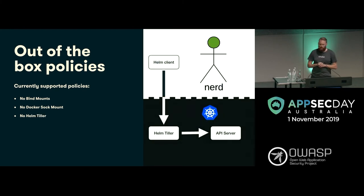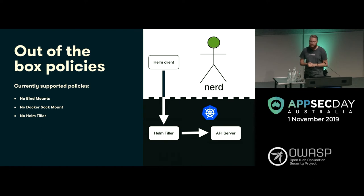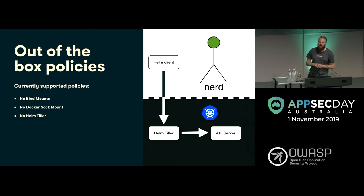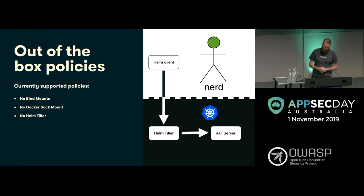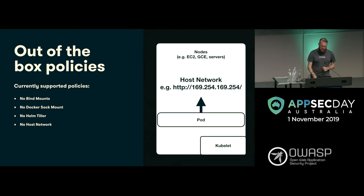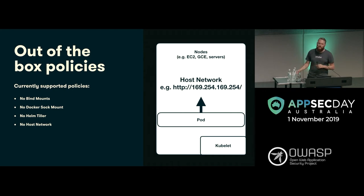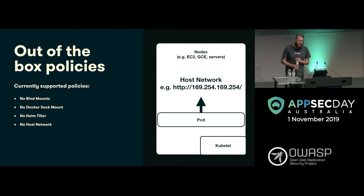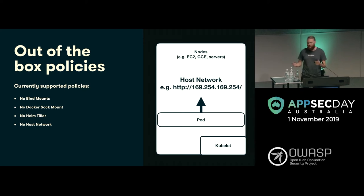We also disallow Helm Tiller. Helm is actually a really nice client that generates some deployments for you and it's pretty easy to use. Unfortunately the Helm Tiller server side has an unauthenticated API by default. We try to disable that and pass deployments straight to the API server. I'll show a deployment shortly where I still use the Helm client but pass it straight to the server instead of going via Helm Tiller. No host networking — that covers the metadata API stuff I mentioned. Any guesses what that API is? AWS metadata API, absolutely — metadata slash latest. You can get the policies associated with it, private key, et cetera. Don't want that happening.